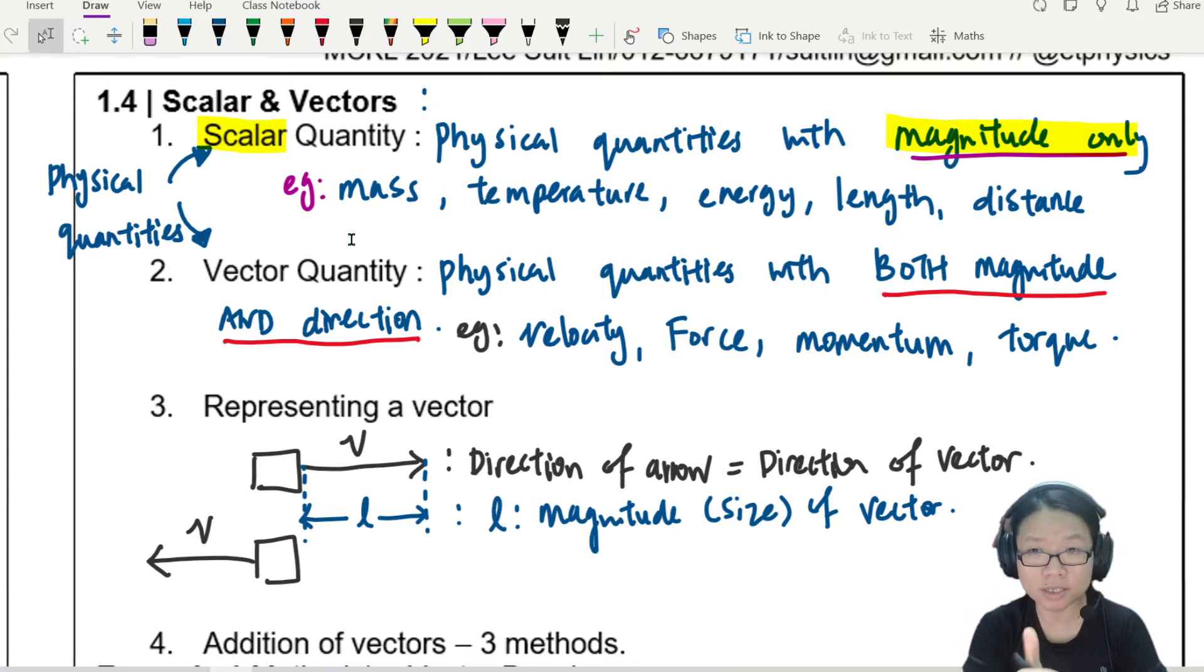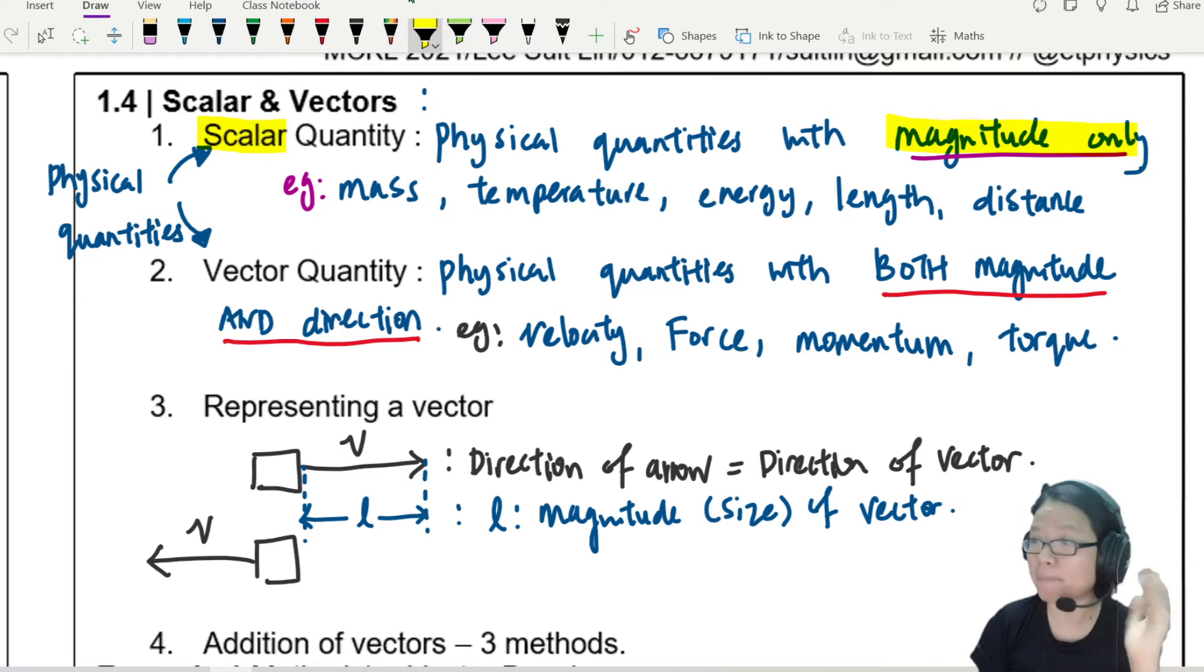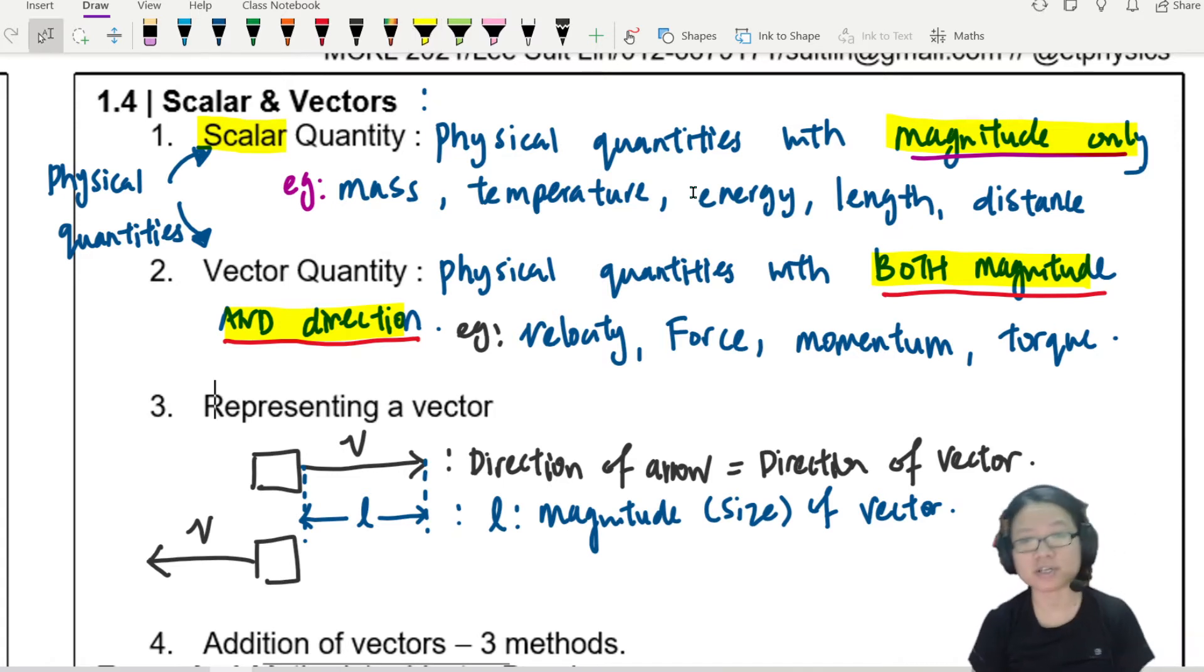It's not just any arrow. The direction of the arrow shows you the direction of the vector. The length of this arrow, L, shows you the magnitude, which is just a fancy way to say size of the vector. If you have another chicken with more powered rails moving faster, then you would draw a longer vector.